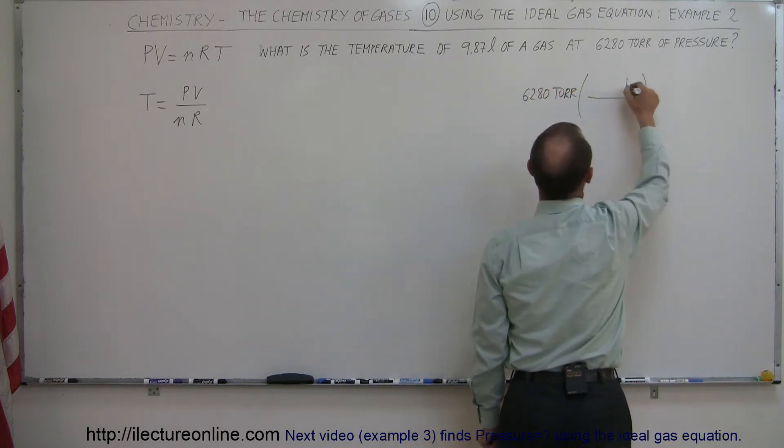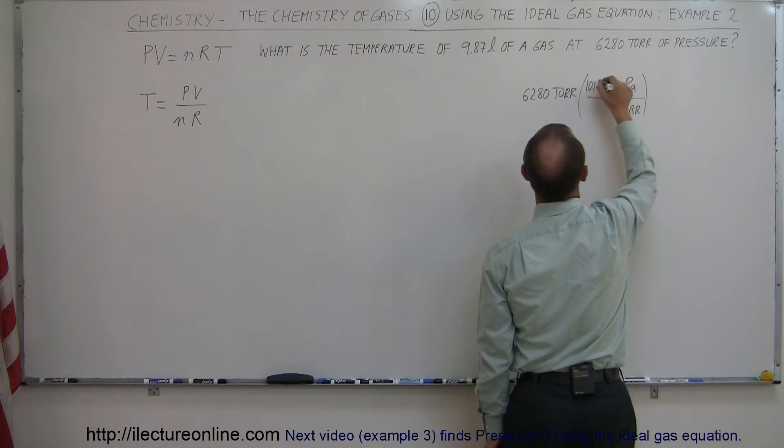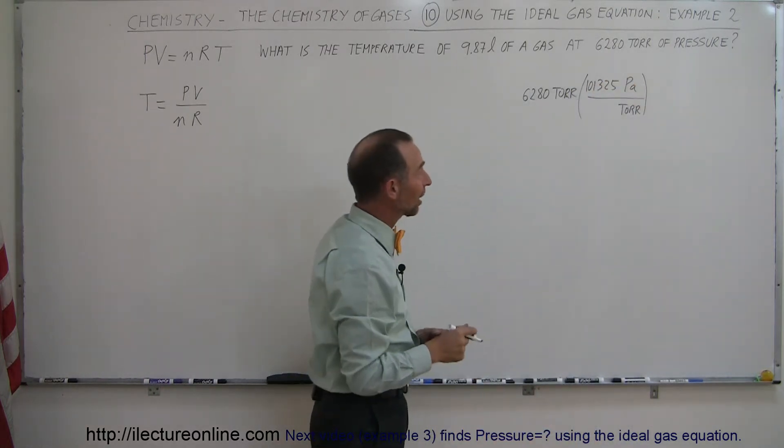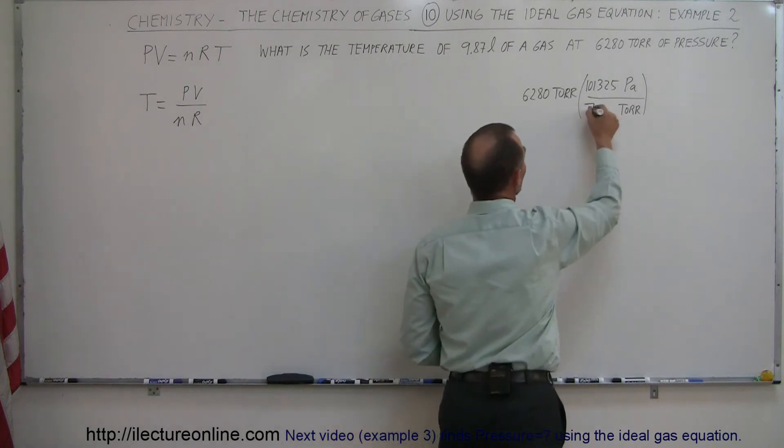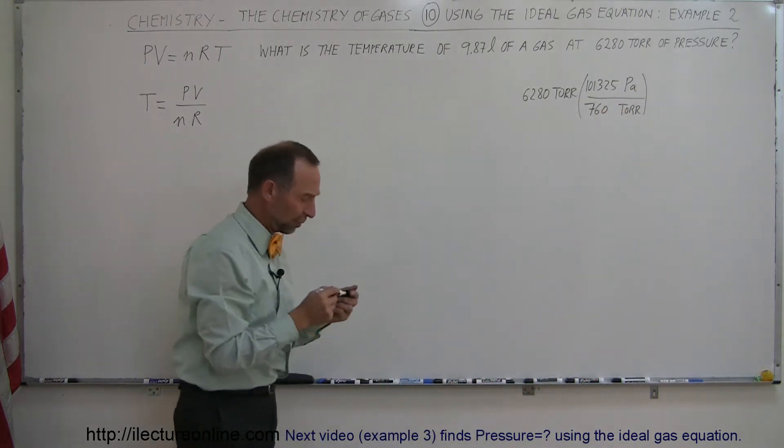We want Pascals and Torr at the bottom. And so Pascals, we have 101,325 Pascals, which is atmospheric pressure in Pascals, divided by 760 Torr, which is the number Torr for atmospheric pressure.